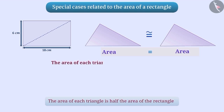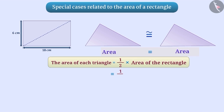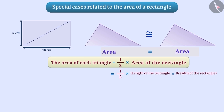The area of each triangle is half into area of the rectangle. In this way, the area of each triangle here will be half into length of the rectangle into breadth of the rectangle. Thus, the area of each triangle will be half into 10 cm into 6 cm, which is equal to 30 square centimeters.